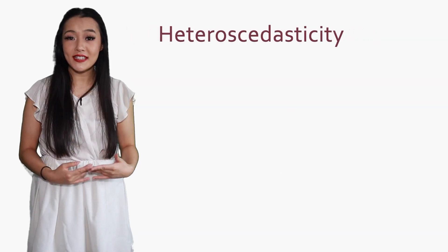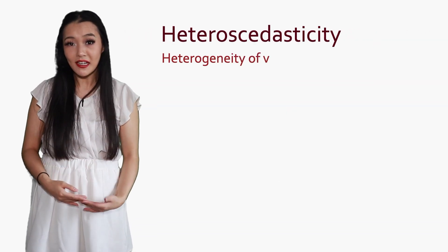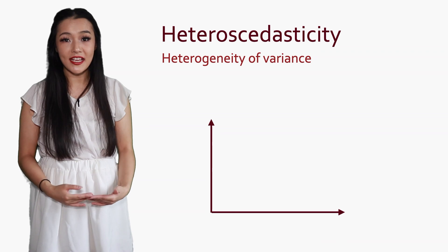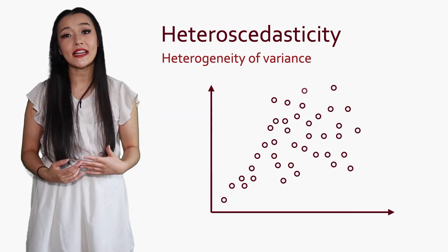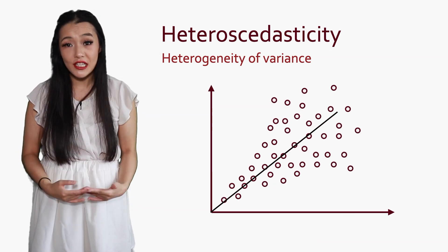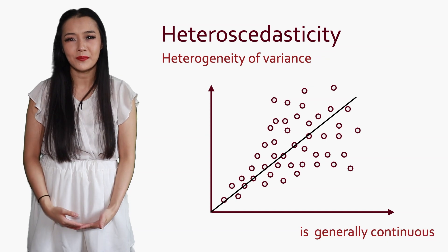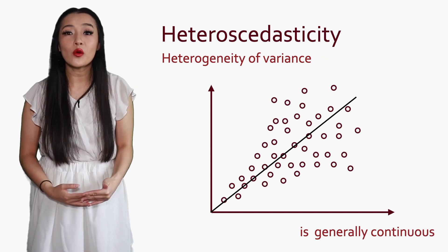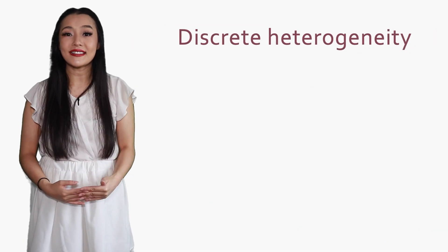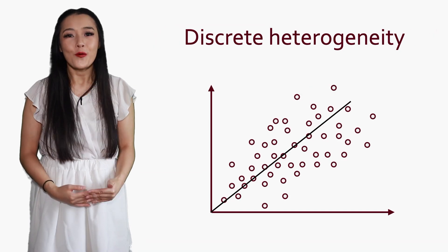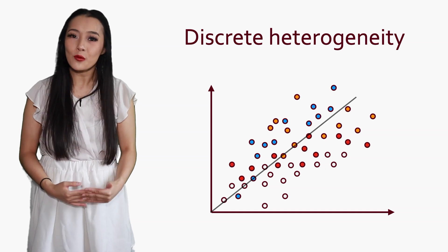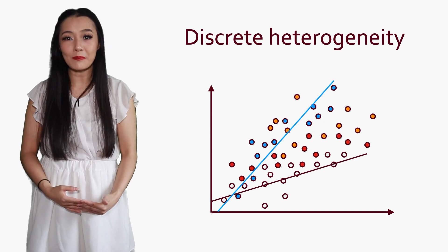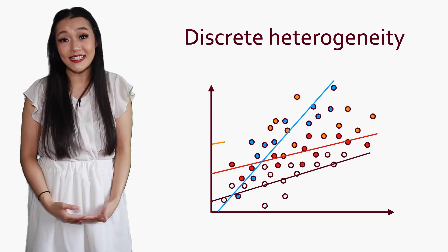In modelling heteroscedasticity — the heterogeneity of variance — we were specifically looking at a continuous form of heterogeneity. Here we will look at discrete heterogeneity, where the variation exists within the individual subsamples of a dataset.